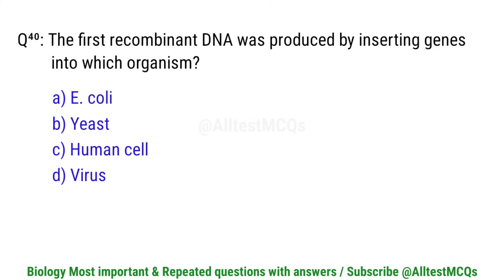Question number 40. The first recombinant DNA was produced by inserting genes into which organism? Right option is A. E. coli.